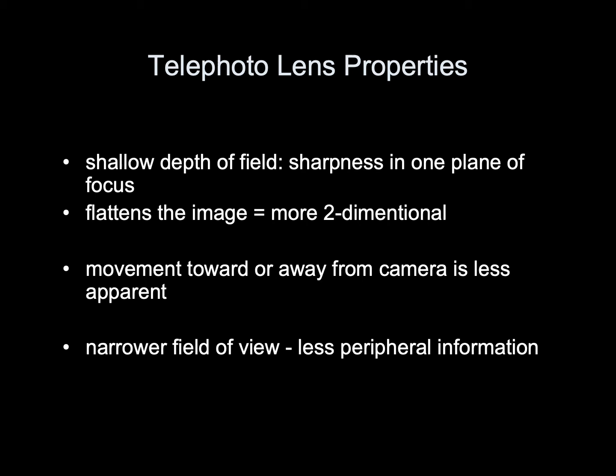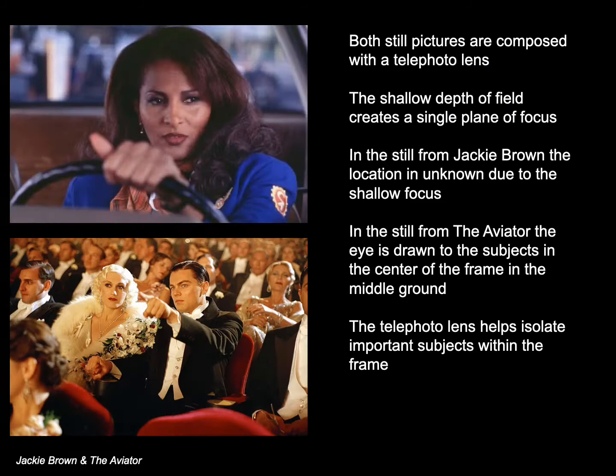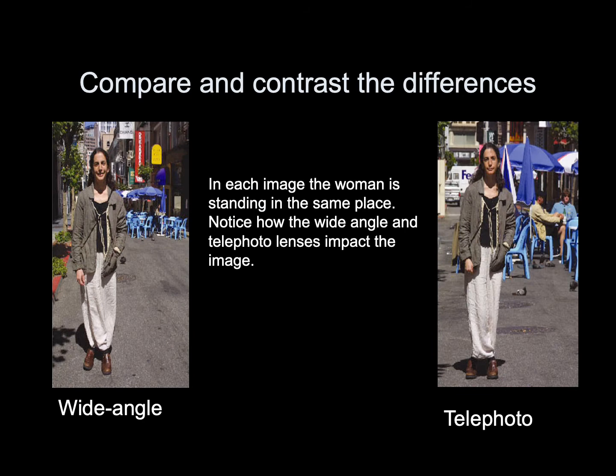Telephoto lens properties: shallow depth of field with sharpness in only one plane of focus; flattens the image for a more two-dimensional look; movement toward or away from the camera is less apparent; and a narrower field of view with less peripheral information. Both stills — from Jackie Brown and The Aviator — are composed with a telephoto lens. The shallow depth of field creates a single plane of focus. In Jackie Brown, the location is unknown due to the shallow focus. In The Aviator, the eye is drawn to the subjects in the center of the frame. The telephoto lens helps isolate important subjects within the frame.